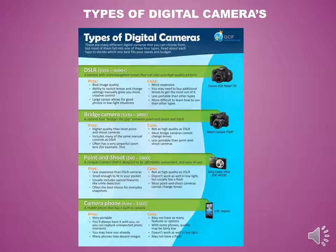When it comes to batteries, cameras generally use rechargeable lithium batteries, although some can use AAs. The battery pack is usually included with your camera, but you may want to buy an extra one just in case it runs out while you're shooting. Make sure to buy a battery pack designed for your specific camera.